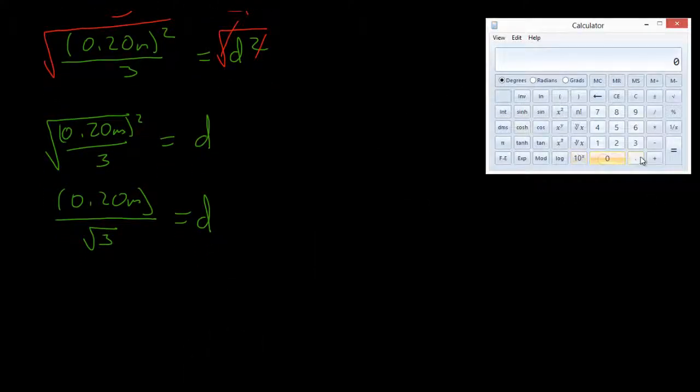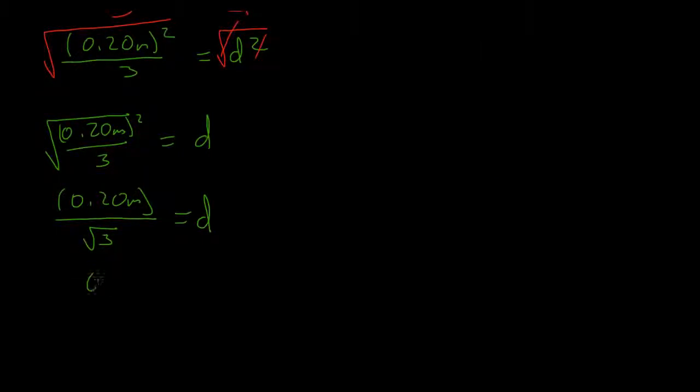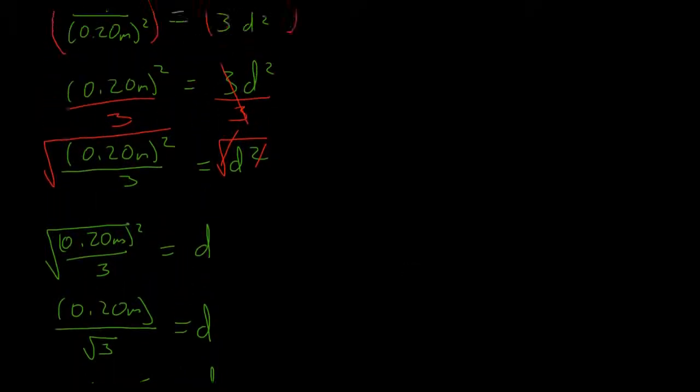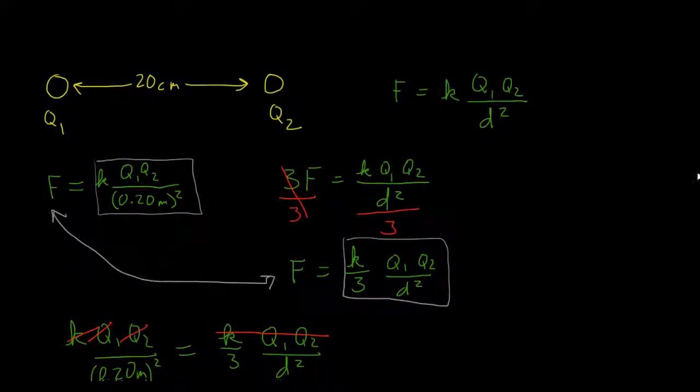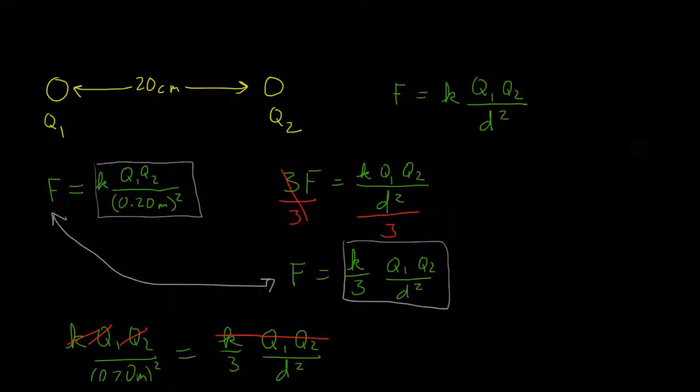Okay, so we will do 0.20 divided by the square root of 3. And that gives us 0.115 and our units will be meters. So 0.115 meters equals D, or we could write this as 11.5 centimeters equals D. And I would only do that because the original problem gave us the distance in centimeters.